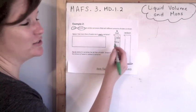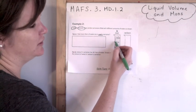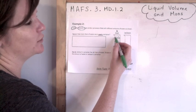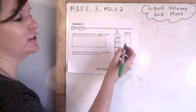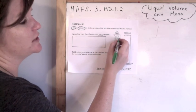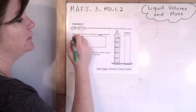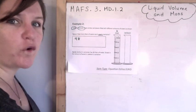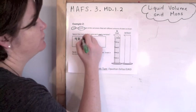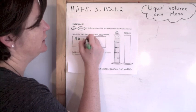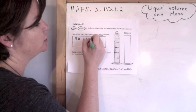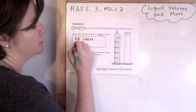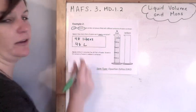I guess they're counting by twos. Let's check: 40, 42, 44, 46, 48, 50. Good. So if we're counting by twos, that means this one will be 48. And don't just put 48 — you need to write 48 liters. Put your unit attached to it. You could write liters or you could write 48L.